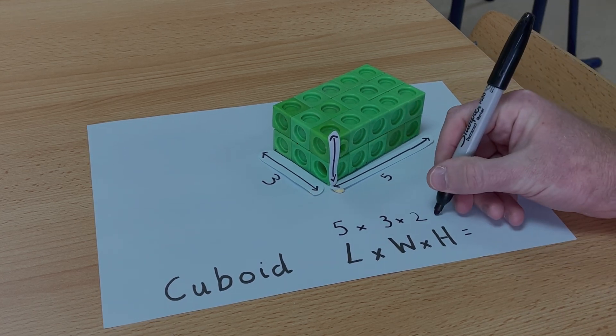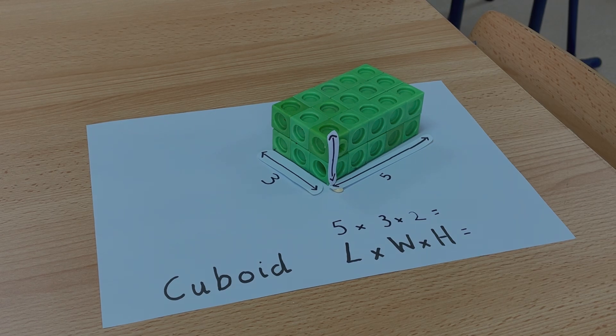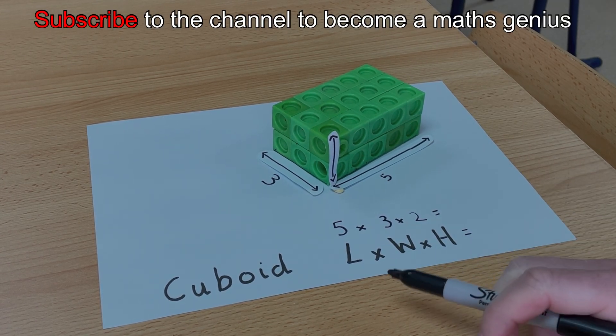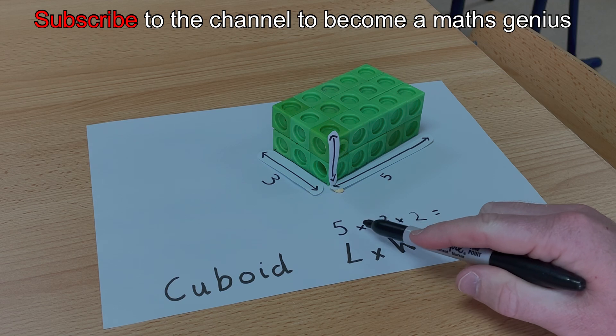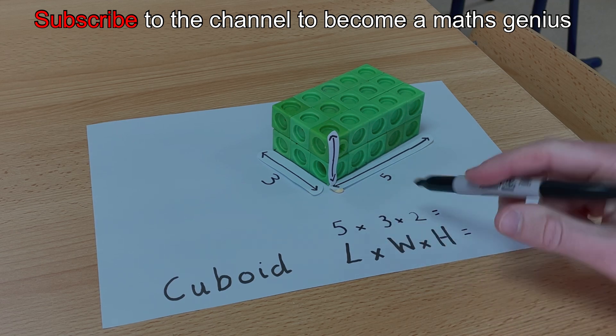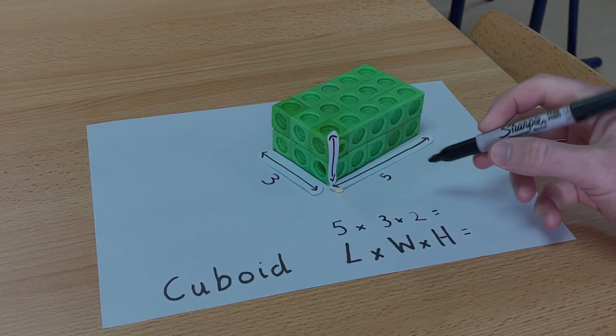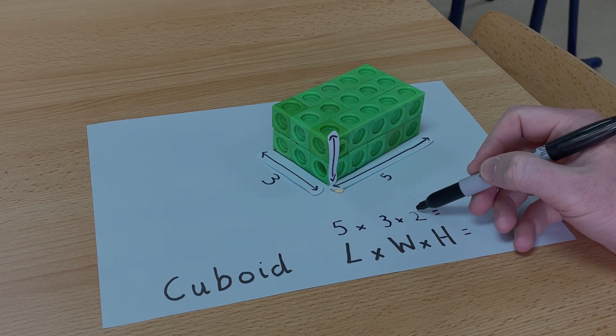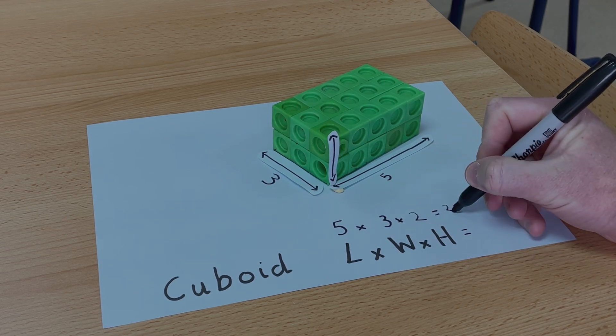Then all I need to do to find the volume is to multiply these numbers together. So 5 multiplied by 3 is 15. And then 15 multiplied by 2 is 30.